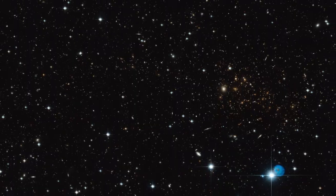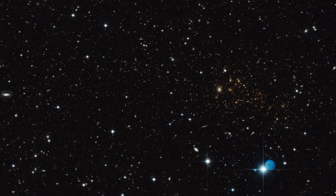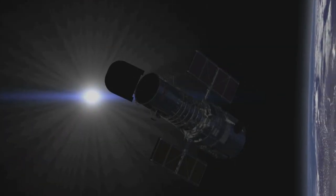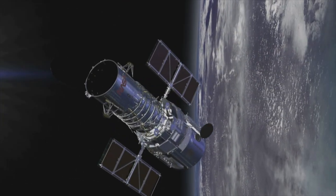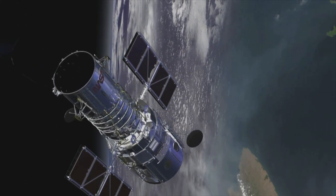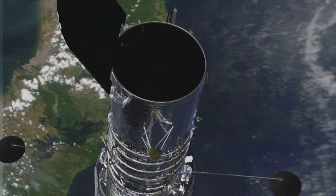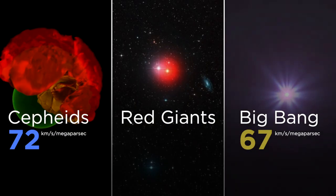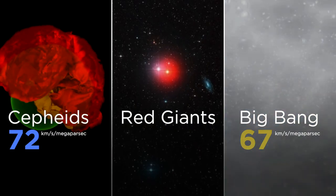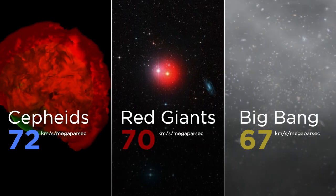We can compare those stars in other galaxies with the same kind of stars we observe in our own Milky Way galaxy. And then we can determine the actual distance to those other galaxies. What we've measured is a value of the Hubble constant equal to 70.